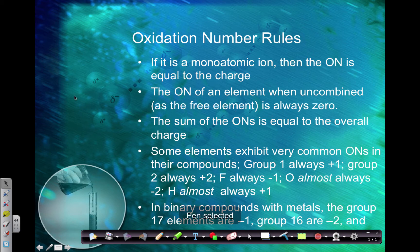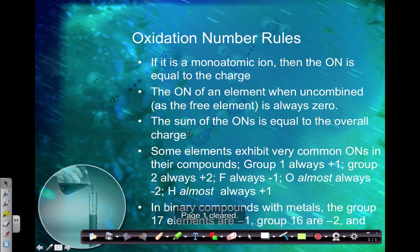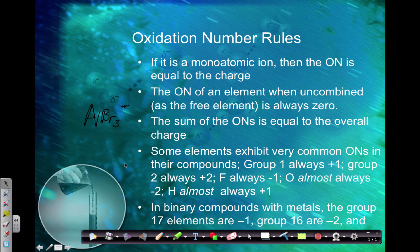An uncombined element — like aluminum by itself, O2, nitrogen gas — the oxidation number is going to be zero. The sum of the oxidation numbers is always equal to the overall charge. So if you've got a neutral compound, the oxidation numbers will add up to zero. If it has a negative charge, they would add up to negative one. Some elements always have the same oxidation number.